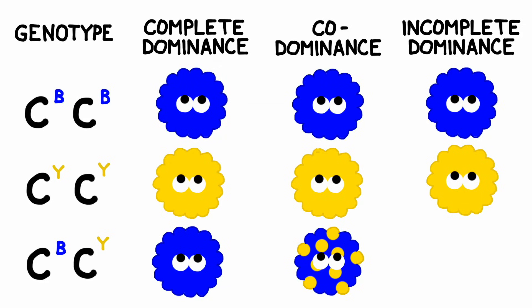If, however, the coat color followed patterns of co-dominance, the hybrid phenotype would be both blue and yellow — traits from both alleles are present together in the phenotype. If dots followed patterns of incomplete dominance, the hybrid offspring would be a blend of the two parental phenotypes. Rather than having a blue phenotype or a yellow phenotype, the offspring would have a green phenotype. In this case, neither of the two alleles is completely dominant.